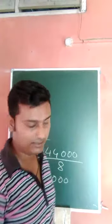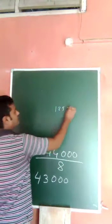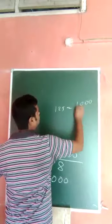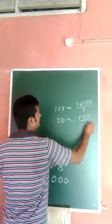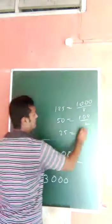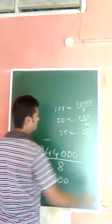Actually, this is the pattern. This is 125, you can write 1000 by 8. Suppose 50 you can write 100 by 2, 25 you can write suppose 100 by 4, like this.